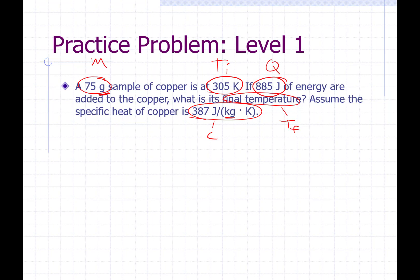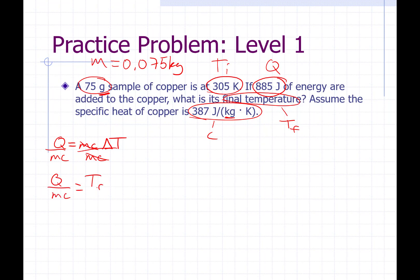So we're going to convert one — I'm going to convert the mass. 75 grams is 0.075 kilograms. Now let's write out our equation: Q equals MC delta T. We're solving for final temperature, which is within the delta T. Let's divide both sides by MC. We get Q over MC equals delta T, which is T final minus T initial. To get T final on its own, add T initial to both sides, and I get T final equals Q over MC plus T initial.